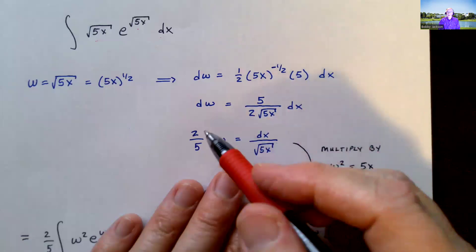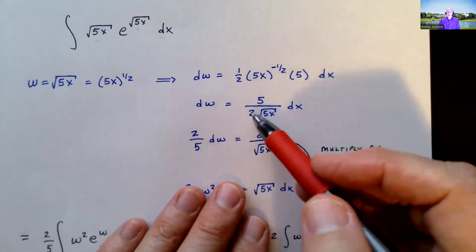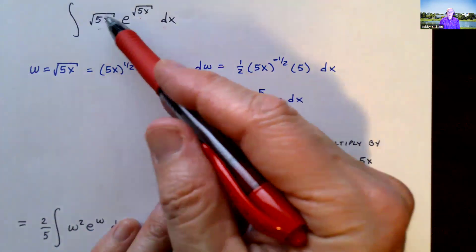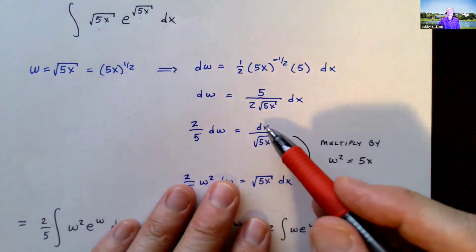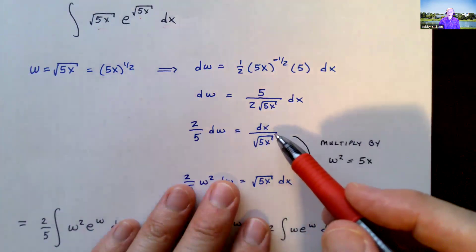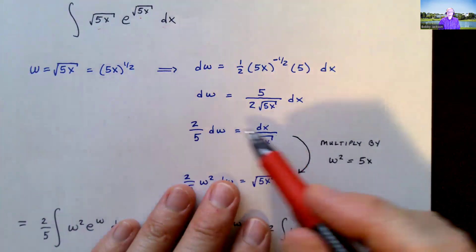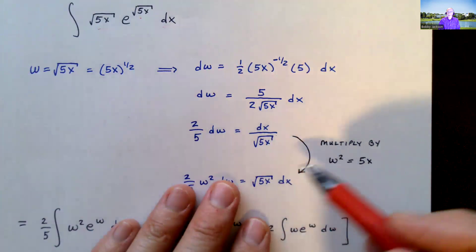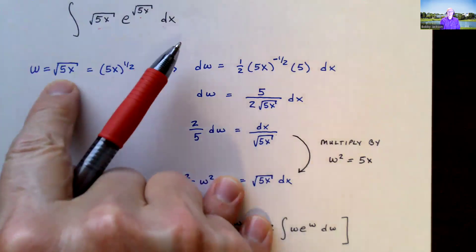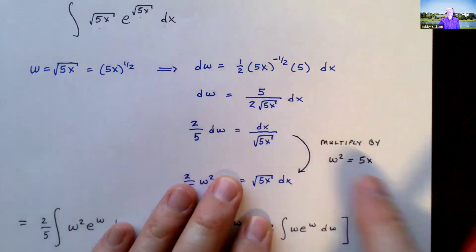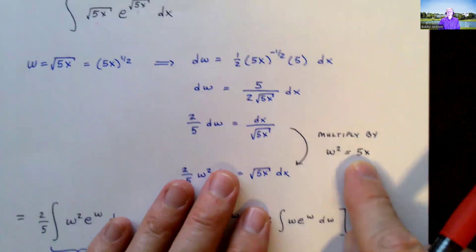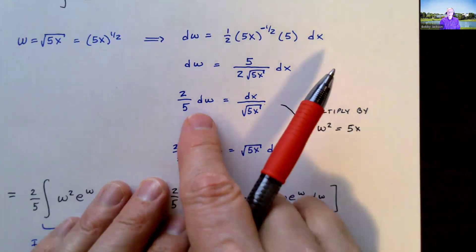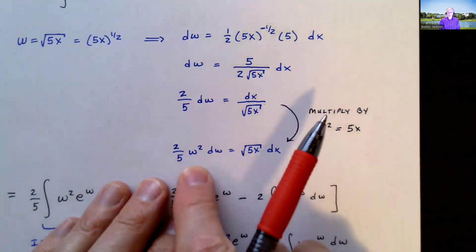I'm going to multiply both sides by two-fifths — two-fifths times five-halves just leaves dw on the left. On the right I have two-fifths times dx divided by the square root of 5x. Then I multiply both sides by 5x, so that side becomes the square root of 5x dx. Since w is the square root of 5x, squaring w gives 5x, so I'll multiply by w squared to keep everything in terms of w.